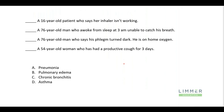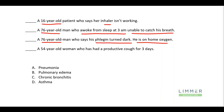Patient matching — we have four patient presentations and four potential conditions. A 16-year-old patient says her inhaler isn't working. A 76-year-old man awoke from sleep at 3 a.m. and can't catch his breath. A geriatric patient whose phlegm turned dark and is on home oxygen. And a 54-year-old woman with a productive cough for three days. The choices are: pneumonia, pulmonary edema, chronic bronchitis, and asthma.